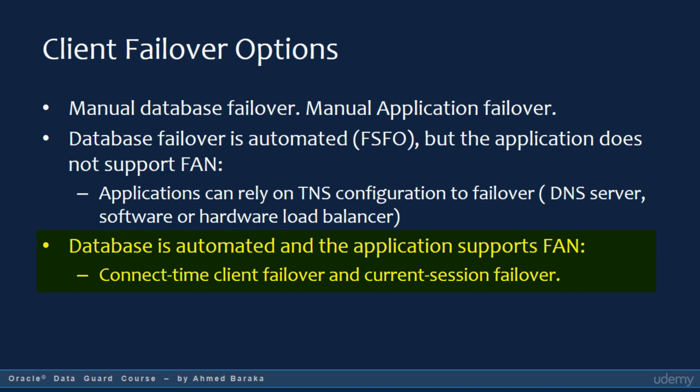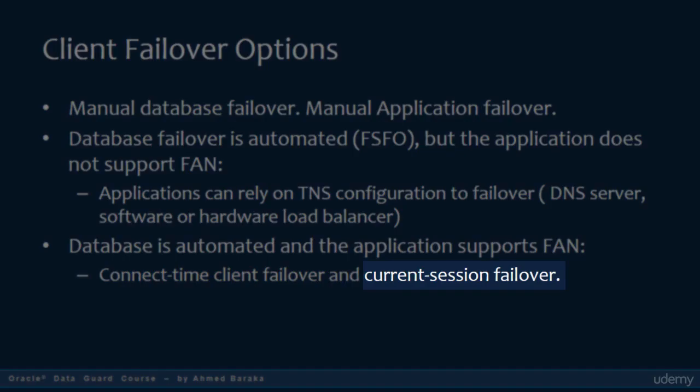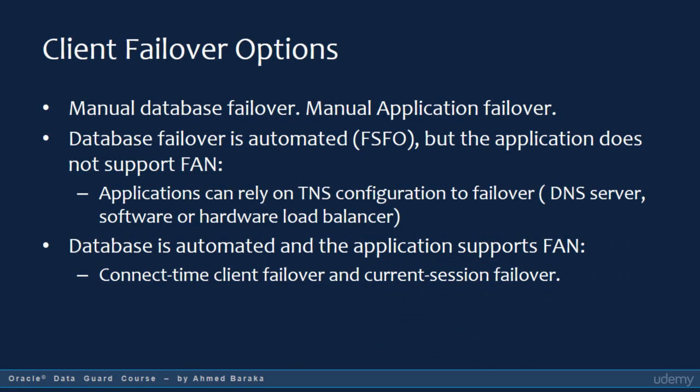When an application fails over, it should handle two types of failover. First, new client connections should be automatically directed to the new primary database — this is called Connect Time Failover. Second, it can be configured to transfer current client sessions to the new primary database without interrupting them — this is called Current Session Failover. In conclusion, you have three options: one, Total Manual Application Failover; two, Database Automatic Failover with application failover done by a third-party component like a load balancer; three, Database Automatic Failover with Application Automatic Failover done by FAN configuration.